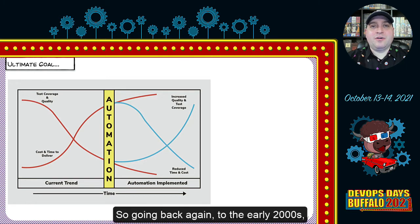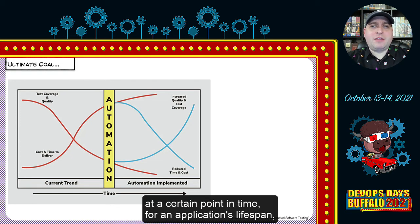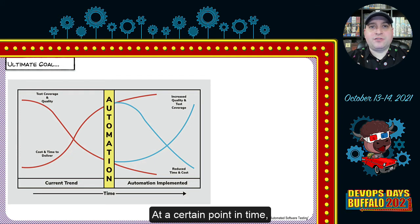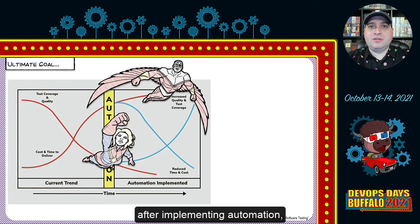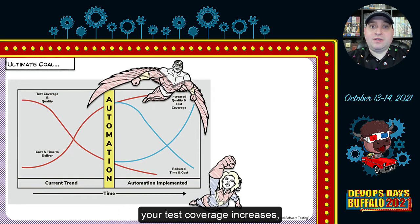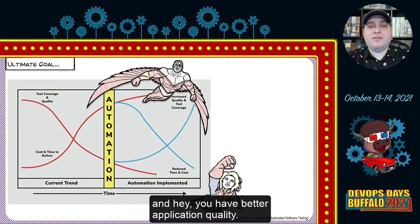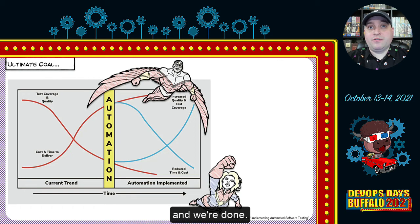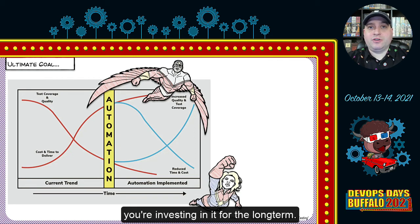Going back to the early 2000s, Alfredi Dustin observed that at a certain point in an application's lifespan, it becomes so large and unwieldy that test coverage shrinks and regression testing becomes very difficult. After implementing automation, your test coverage increases, the time to test decreases, and you have better application quality. But it's not just about a magical line where you implement automation and you're done — when you're investing in automation, you're investing in it for the long term, for as long as your application exists.